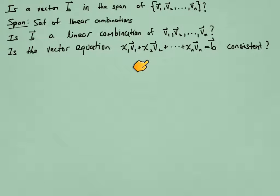And we're asking whether one of those linear combinations can get me the vector B. So the question becomes, is this vector equation consistent? Is there a solution to this equation?